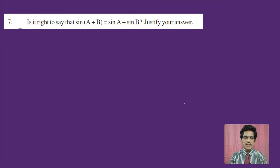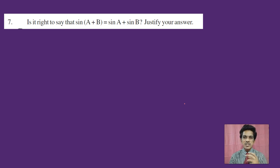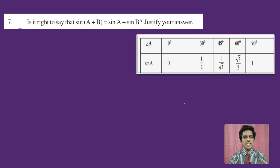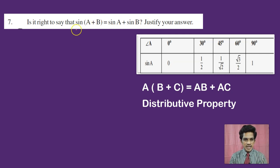Let us move to question number 7: Is it right to say that sin(A + B) equals sin A + sin B? To check this, we can substitute values from our table — 0, 30, 45, 60, 90 degrees — and test whether the equation holds. We can take any two acute angle values for A and B.